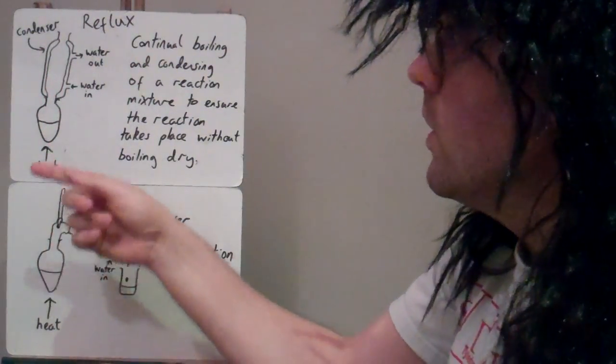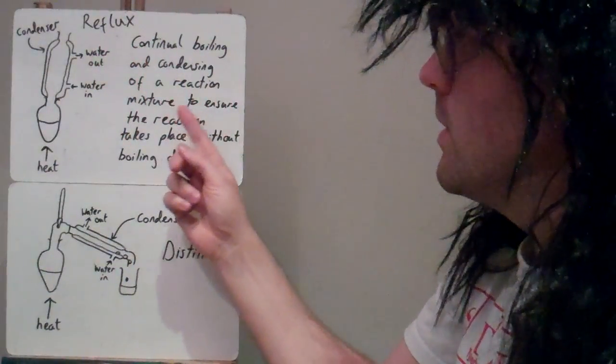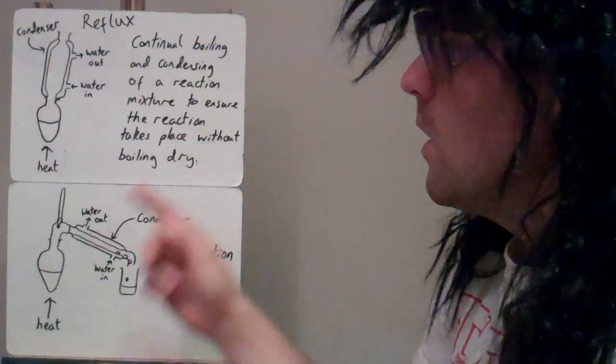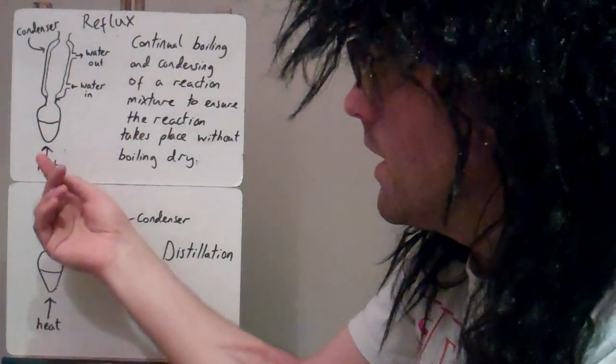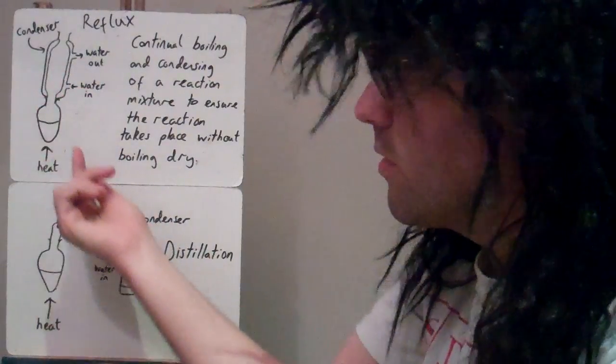So refluxing is a continual boiling and condensing of a reaction mixture to ensure the reaction takes place without boiling dry. So we can get up to higher temperatures here and everything just evaporates, goes in the condenser, condenses and drips back down.